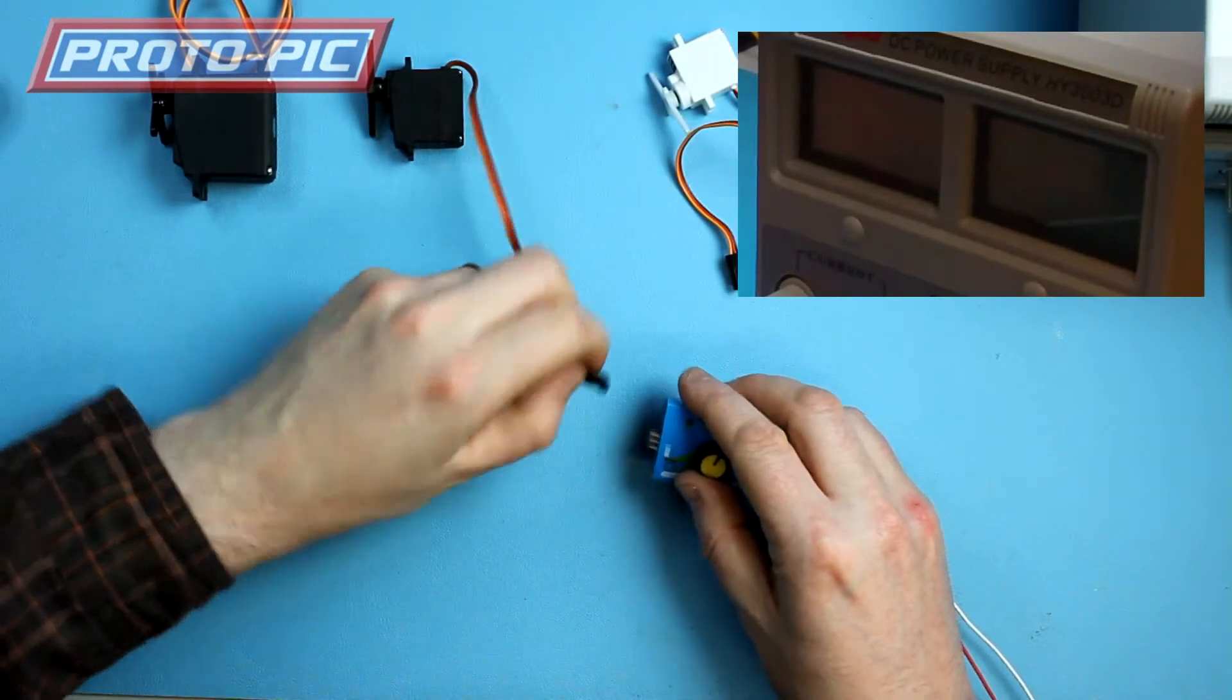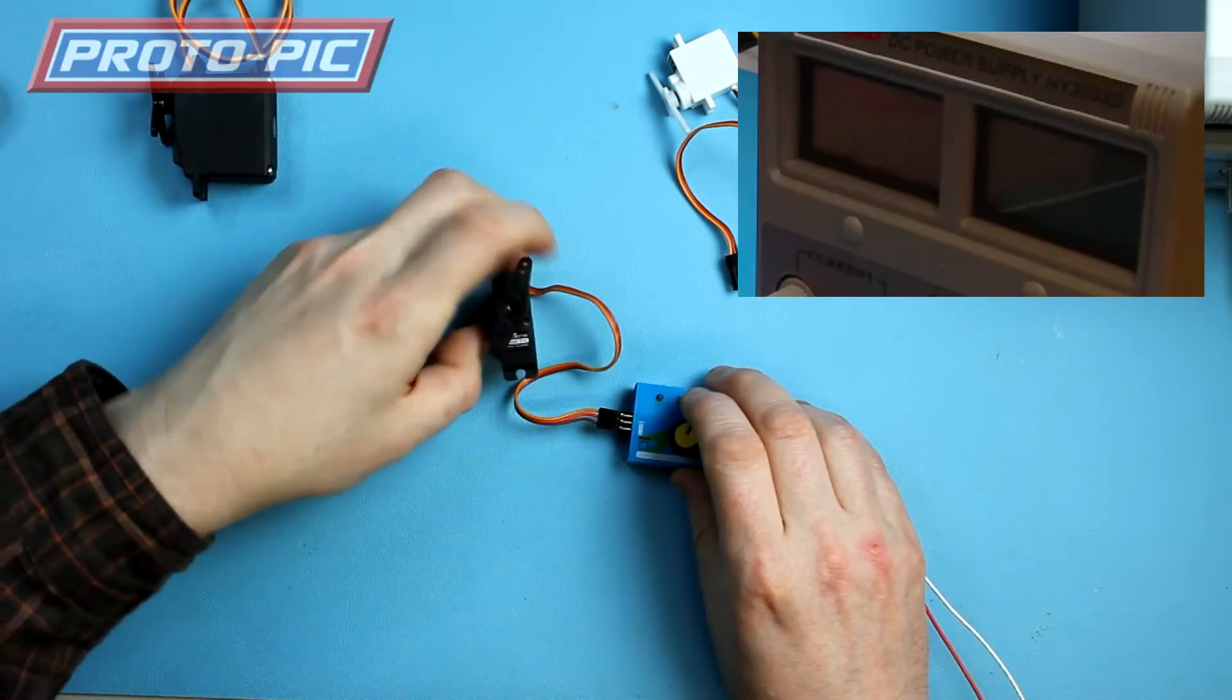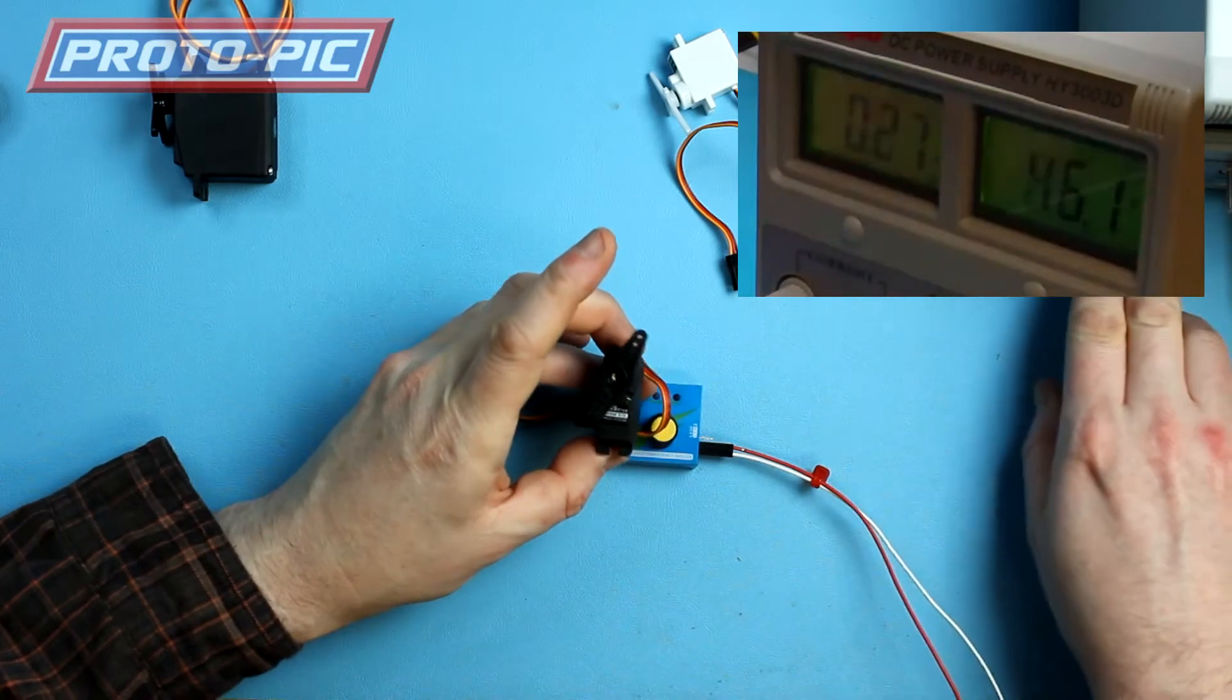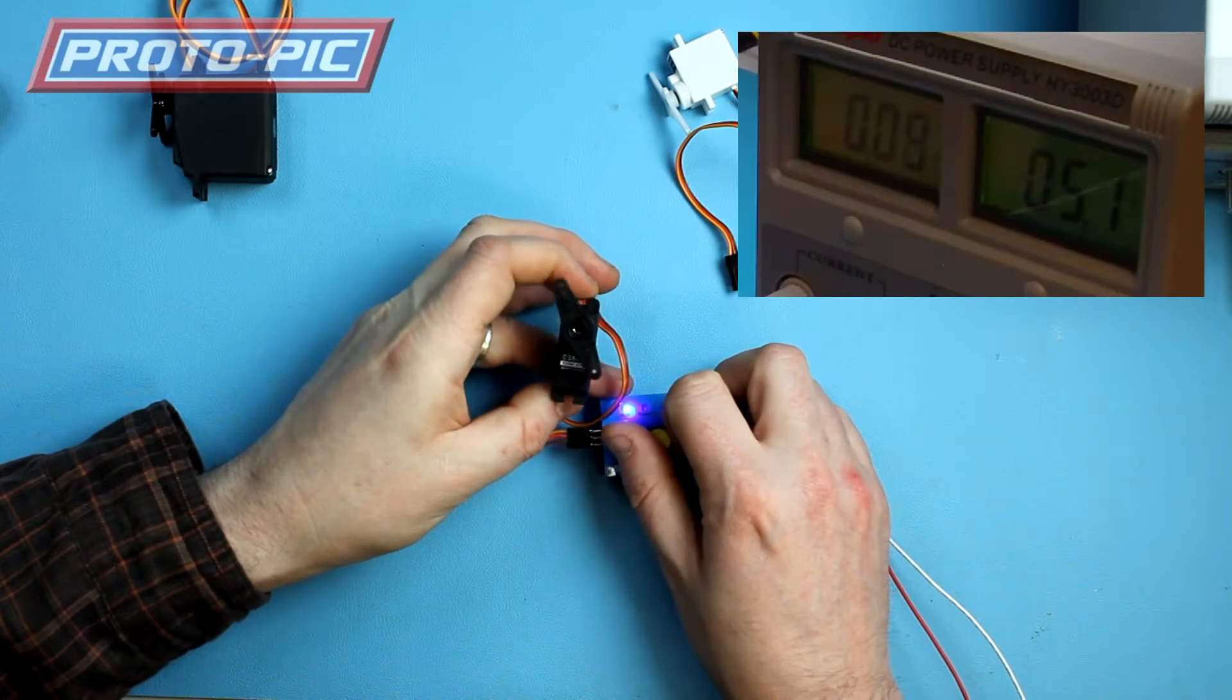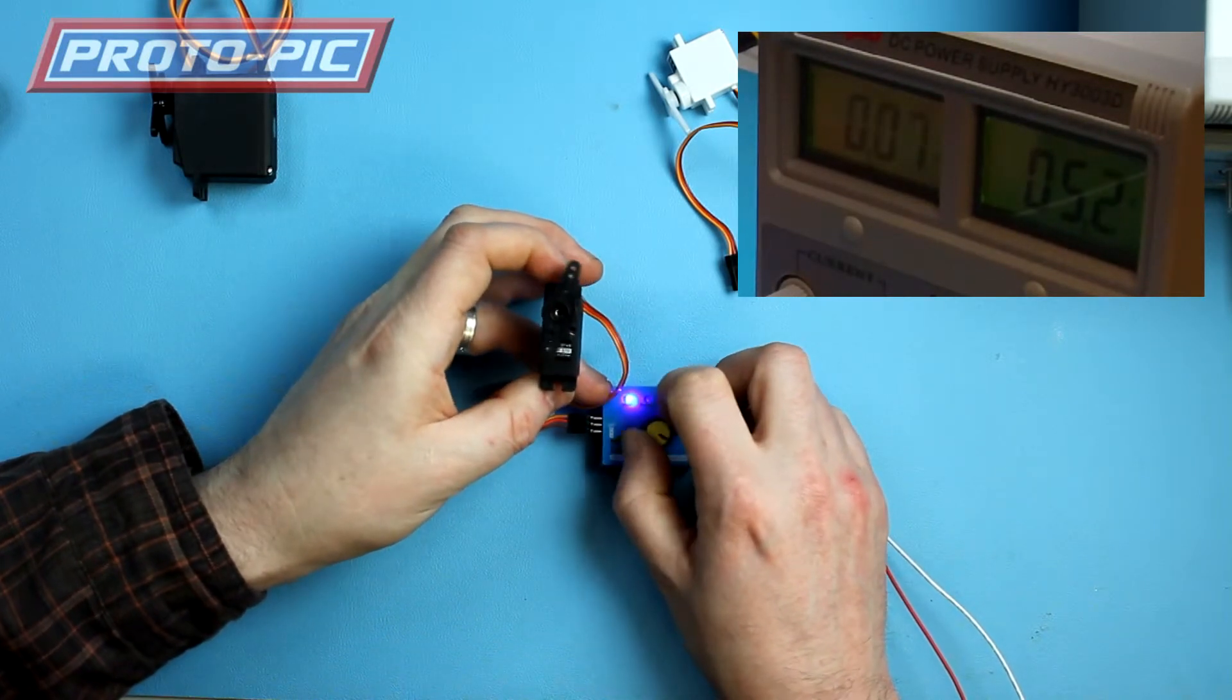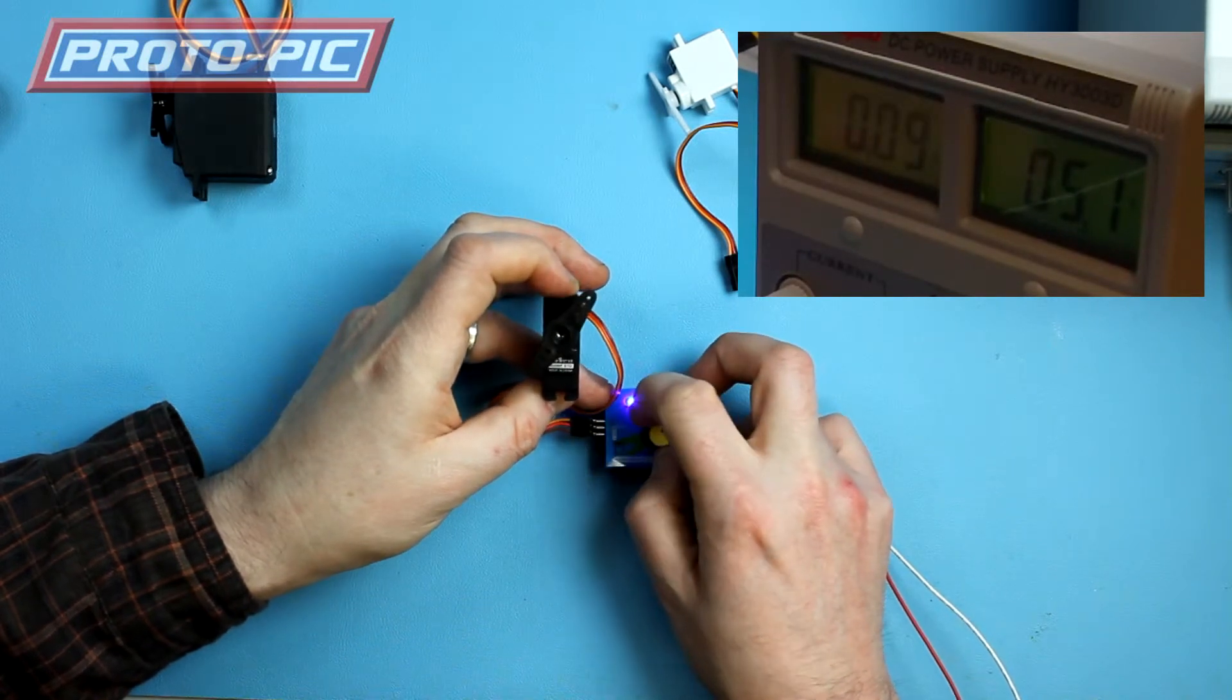And plug in the medium servo. Like I say it can do all three at once but I just thought I'd show you individually. So in manual mode. That's peaking at 0.2. I've seen that go to 0.2 of an amp.